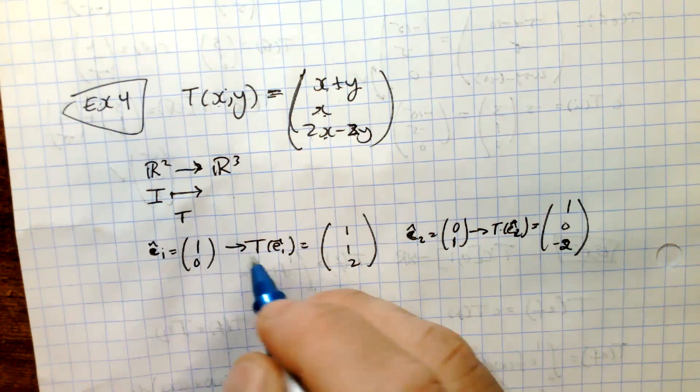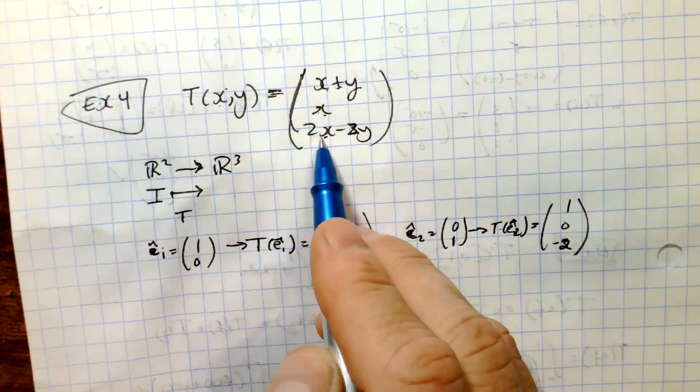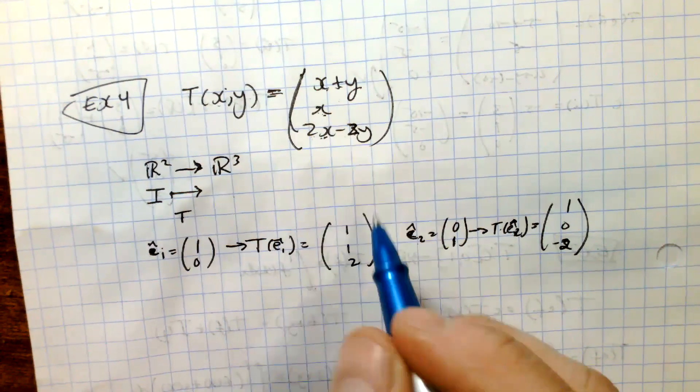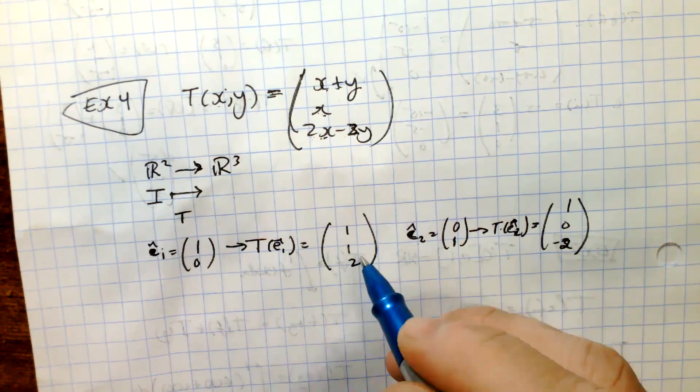So the column vector of the identity, the first one, is 1, 0. Under the transformation, you get 1 plus 0, 1, and then 2 times 1 minus 0. So this is the first column. This is the resulting transformation of the first element of the identity.